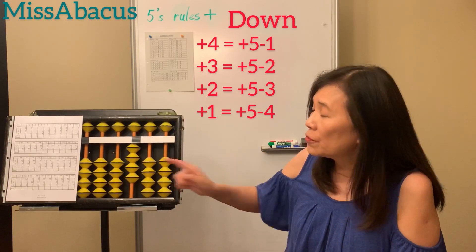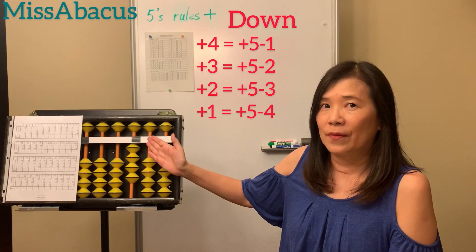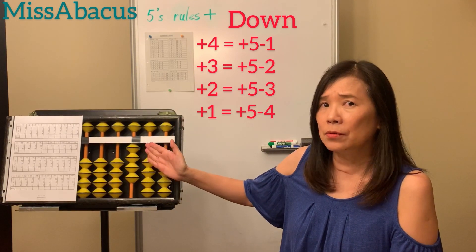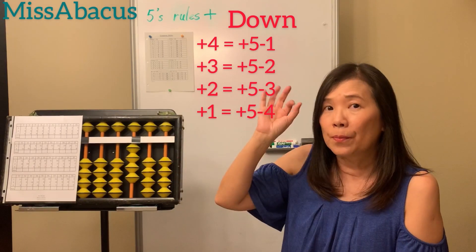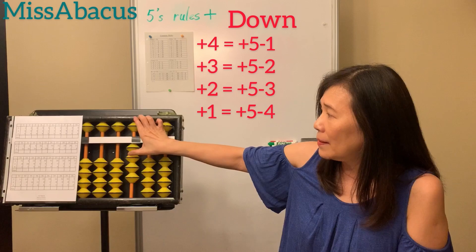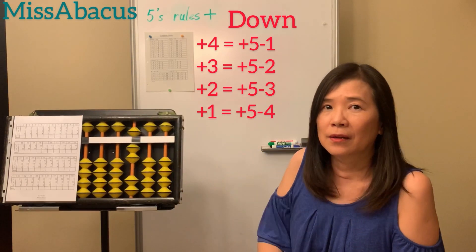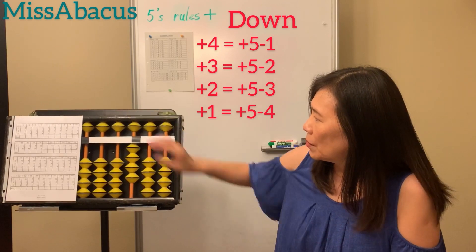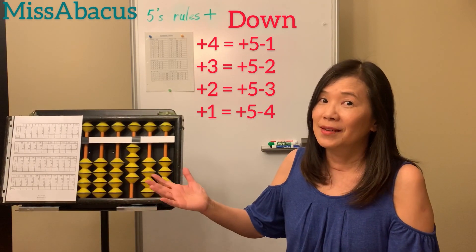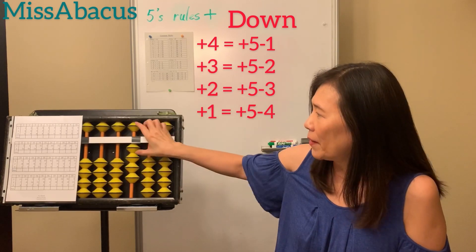Let's do four plus three. You have five, so it's five — it's enough for three but too much, right? So plus three: if you plus five you minus two back. So down five, down two — that's three. Okay, let's do plus two. Plus two: you do five minus three, so down five, down three — that's two.